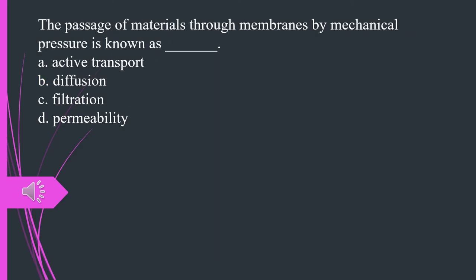The passage of materials through membranes by mechanical pressure is known as what? A. Active transport. B. Diffusion. C. Filtration. D. Permeability. The answer is C. Filtration.